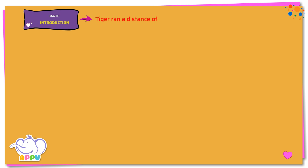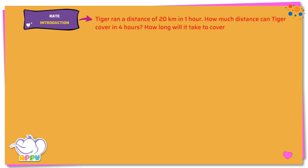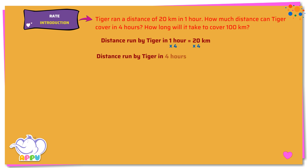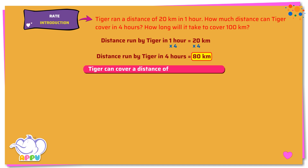Tiger ran a distance of 20 kilometers in one hour. How much distance can Tiger cover in four hours? Distance run by Tiger in one hour equals 20 kilometers. To find the distance traveled in four hours, we multiply both sides by four. Four times one hour equals four hours. Four times 20 kilometers equals 80 kilometers. So Tiger can cover a distance of 80 kilometers in four hours. This answers the first part of the question.